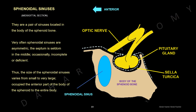Sphenoidal sinuses. This is the body of the sphenoid bone in mid-sagittal section, showing the sella turcica occupied by the pituitary gland, the optic nerve, and the sphenoid sinus. Sphenoidal sinuses are a pair of sinuses located in the body of the sphenoid bone. They are very often asymmetric, and the septum is seldom in the middle — occasionally incomplete or deficient. Thus the size varies from small to very large, occupying the anterior part to the entire body of the sphenoid.